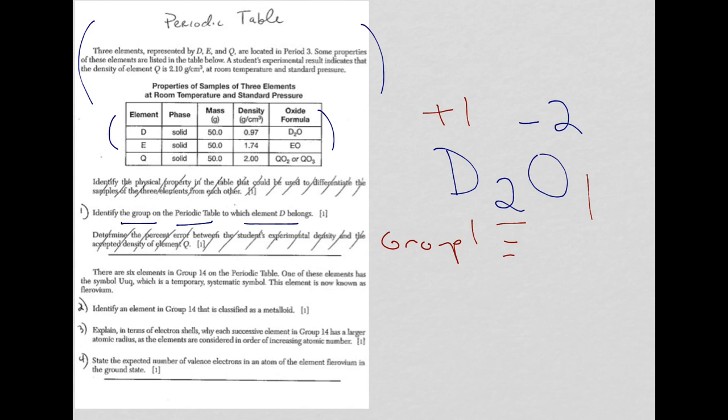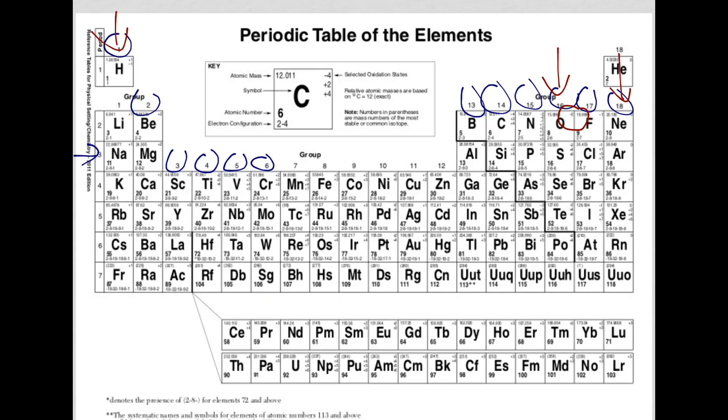Let's take a look at the bottom. We have three questions that go along here with a couple of sentences about the elements in Group 16. Let's take a look at Question 2. Identify an element in Group 14 that is classified as a metalloid. A metalloid or a semi-metal, you should know this.